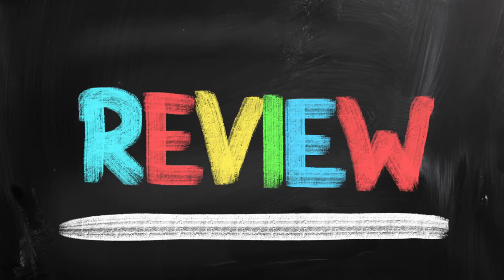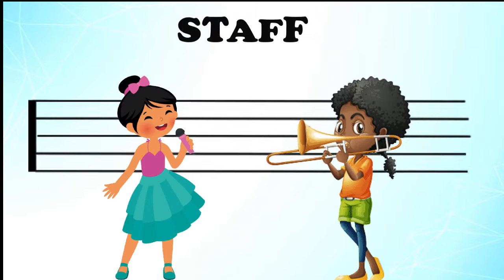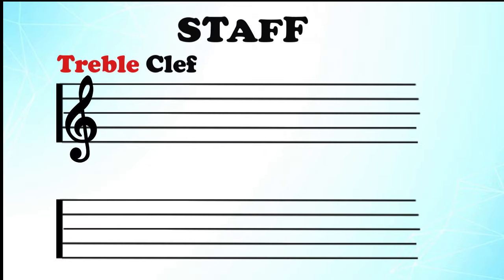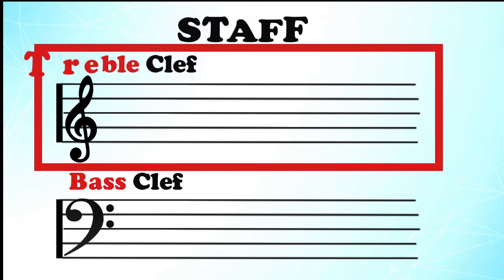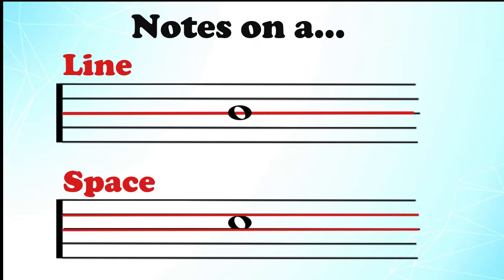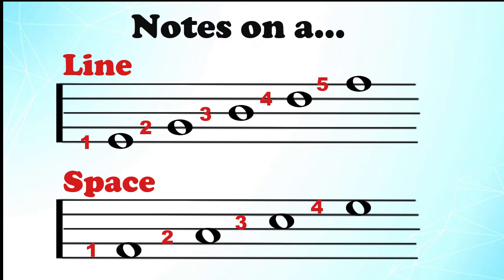Let's talk about what we learned so far. We know that musicians write music on a staff to know what note to sing or play. We know that we can have different clefs on the staff, such as treble or bass clef, but today we only talked about treble clef. We also learned that there are two types of notes, notes on a line or notes on a space. In fact, there are five lines and four spaces on our staff.